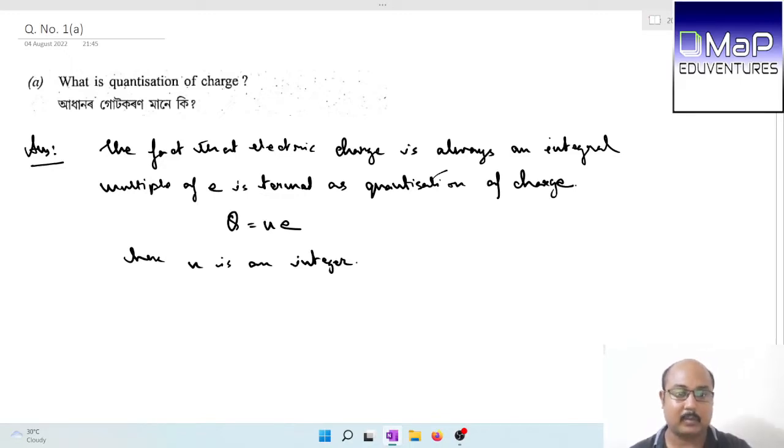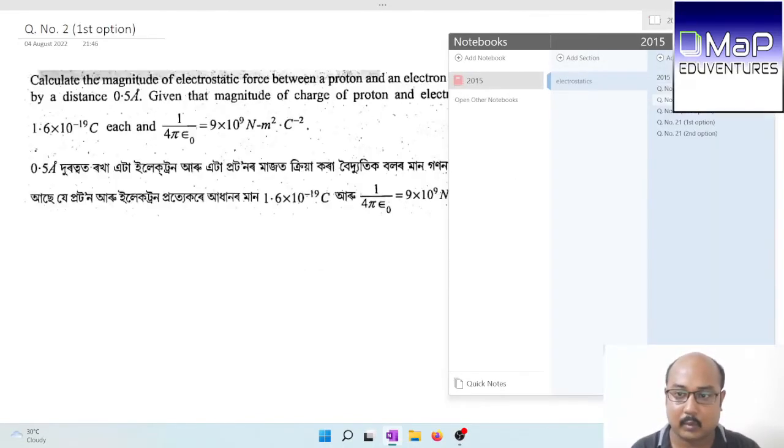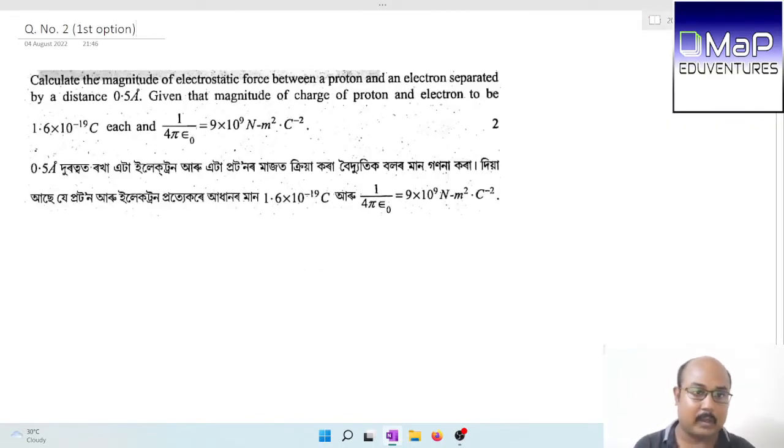The total charge of a body is always Q equals Ne. So we move to the next question, question number two. Calculate the magnitude of electrostatic force between a proton and an electron separated by a distance 0.5 angstrom. Given that magnitude of charge of proton and electron to be 1.6 into 10 to the power minus 19 coulomb each.